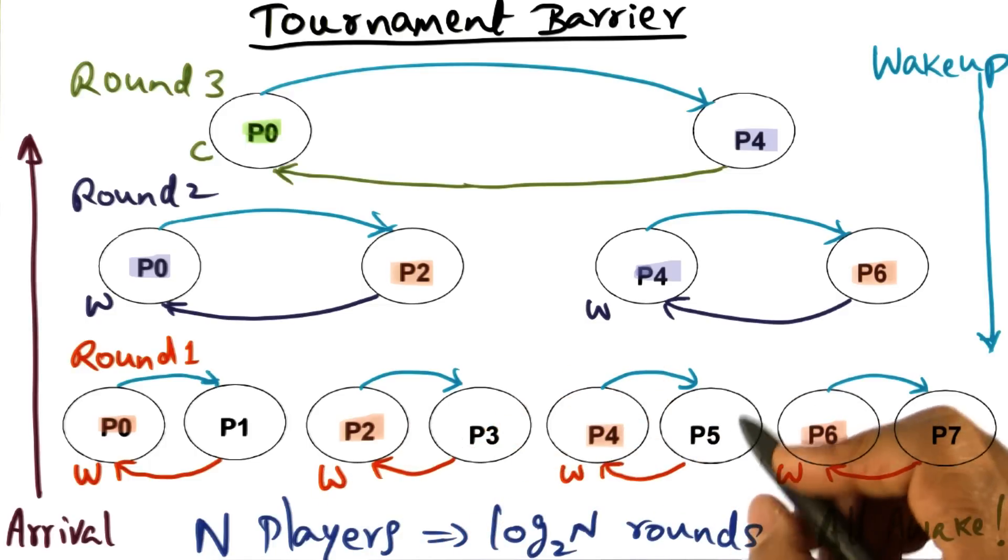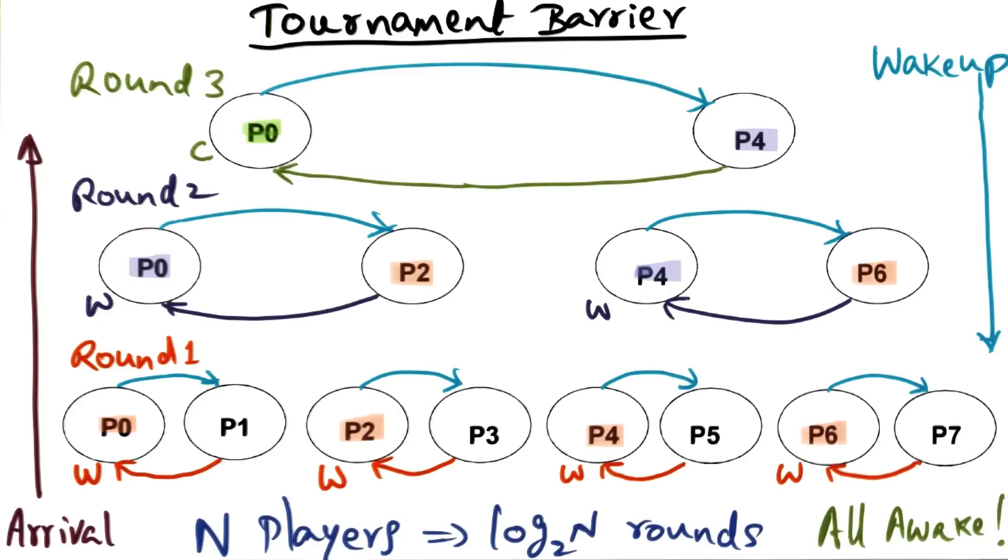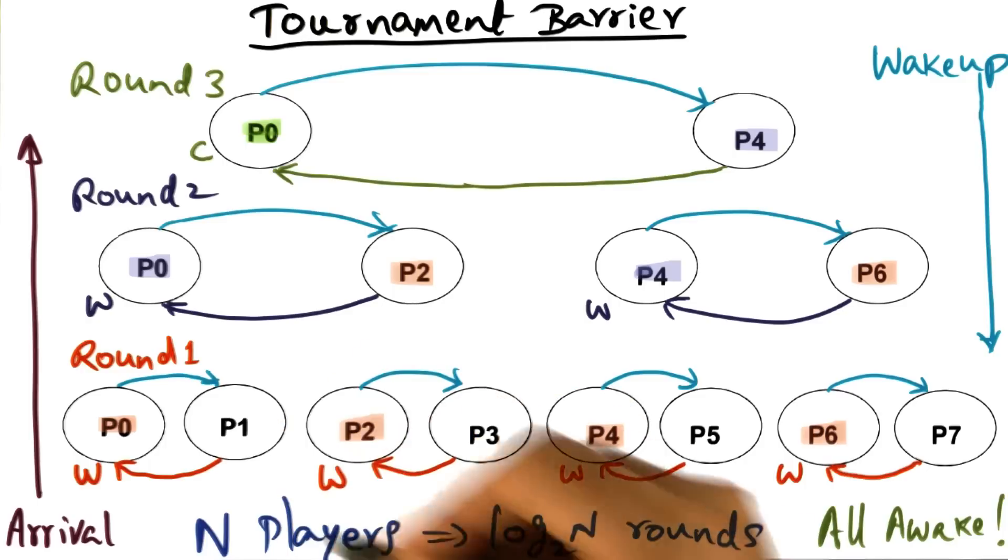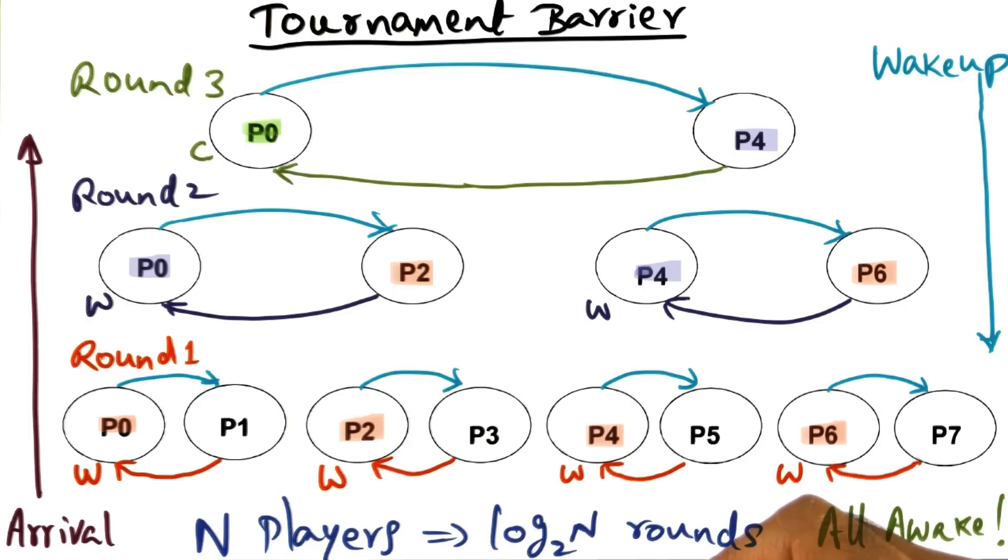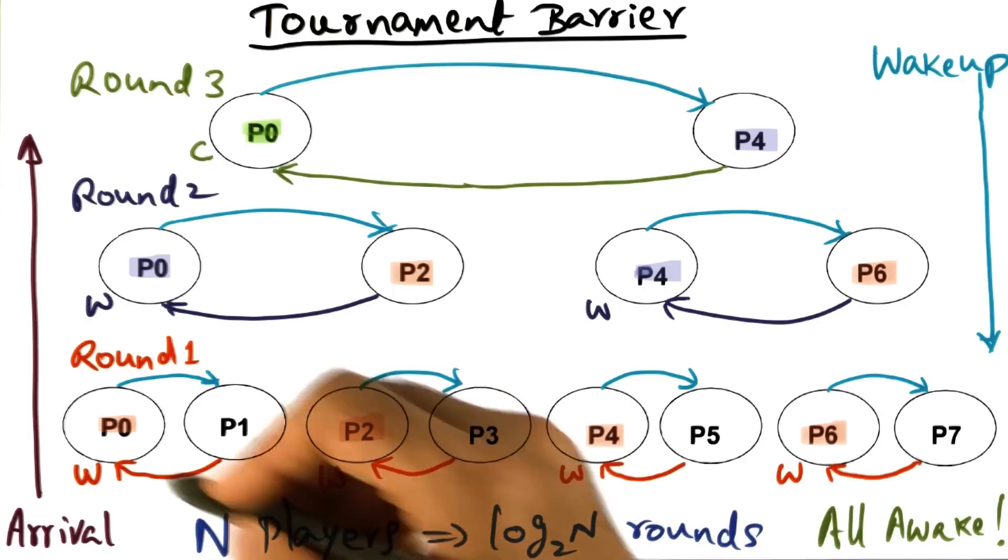The parent, for instance, could spin on a spin location to which multiple children are going to come and indicate that they are done. That's not possible in the tournament barrier because it is arranged as a tournament where the two players playing against each other in every match.